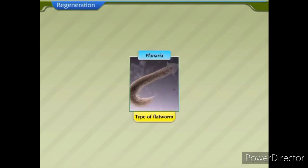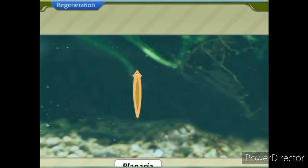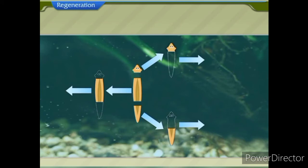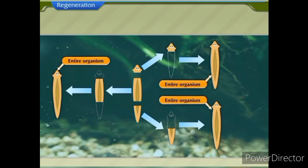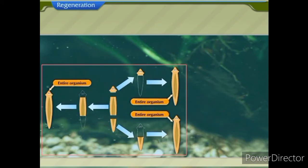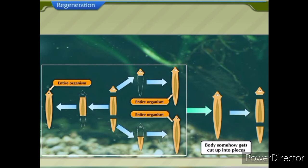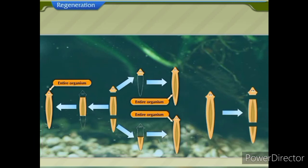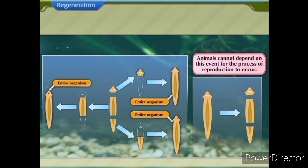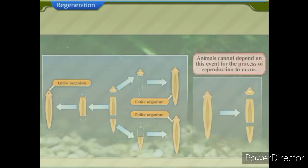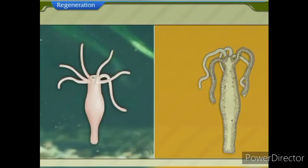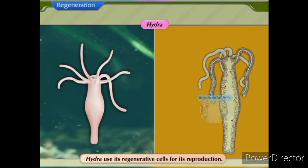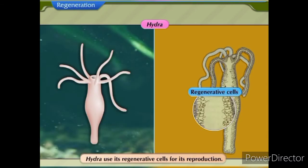For example, when planaria — a type of flat worm — is cut into many pieces, each piece develops into an entire organism. This process occurs only if the body of planaria somehow gets cut up into pieces. But animals cannot depend on this event for the process of reproduction to occur.